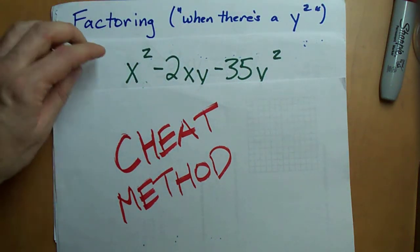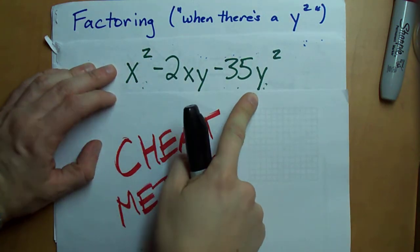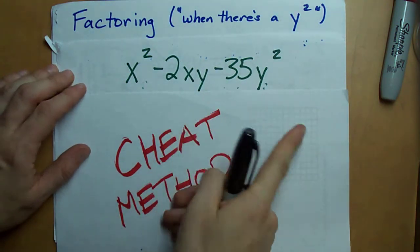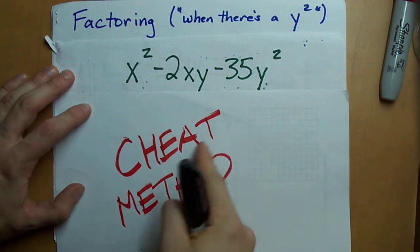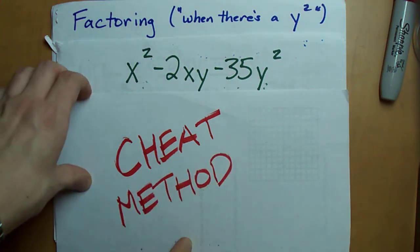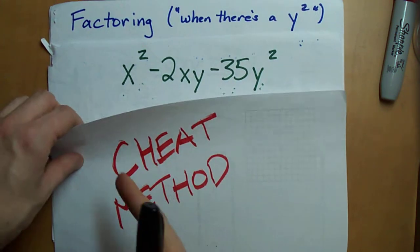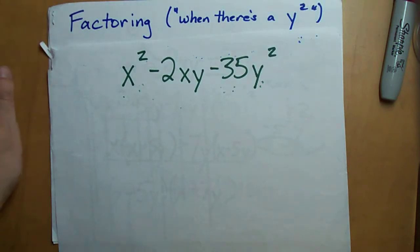When you're asked to factor something that ends in y squared like this one does, there's an official way to do it, but there's also a cheat way to do it. This cheat way is by no means mathematically official, but it works. So let me show you.